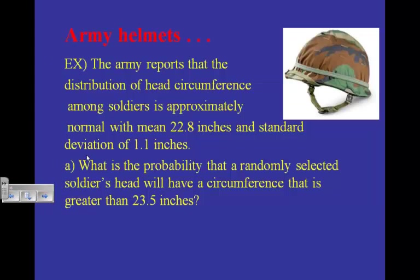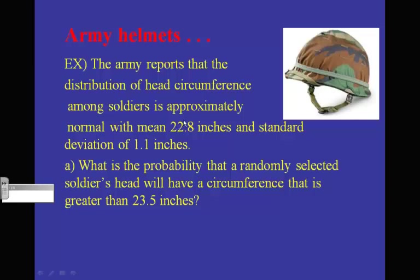Here's an example. The Army reports that the distribution of head circumference among soldiers is approximately normal — there's the key phrase, approximately normal — with a mean of 22.8 inches and a standard deviation of 1.1 inches. So we know it's approximately normal; those are population parameters.